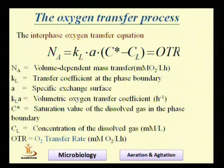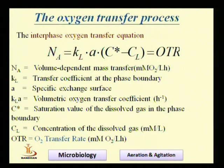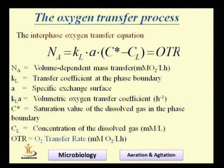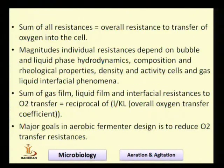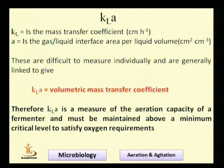This equation tells us what parameters are involved and how they are affected. The oxygen transfer from the bulk gas phase to the bulk liquid phase is decided by kL, a, C*, and CL. To carry out efficient aeration, we need to understand what these parameters are, how they are determined, and what effects different conditions have on them. kL is the mass transfer coefficient and a is the area through which transfer takes place.